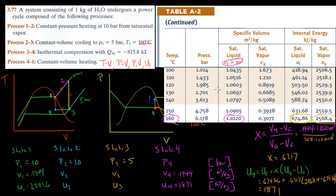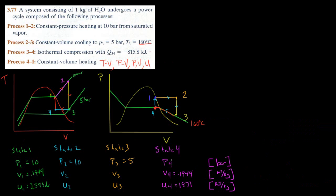P4 is the saturation pressure at 160 degrees from Table A2, which equals 6.178 bar. Now let's deal with states two and three, which are both superheated. For state three, I know the temperature is 160 degrees Celsius at 5 bars, so I'll get more information there first.